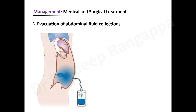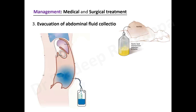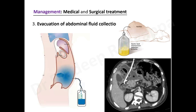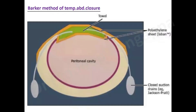We can evacuate any fluid collection — for ascites, ultrasound-guided drainage reduces intra-abdominal pressure. In pancreatitis, pigtail drains are placed for fluid collections. Even in dengue, after large-volume resuscitation, pleural and peritoneal effusions can be drained under platelet cover, significantly improving cardiac output and reducing lactate. It is vital to measure intra-abdominal pressure when giving large-volume resuscitation and to drain these fluid collections.